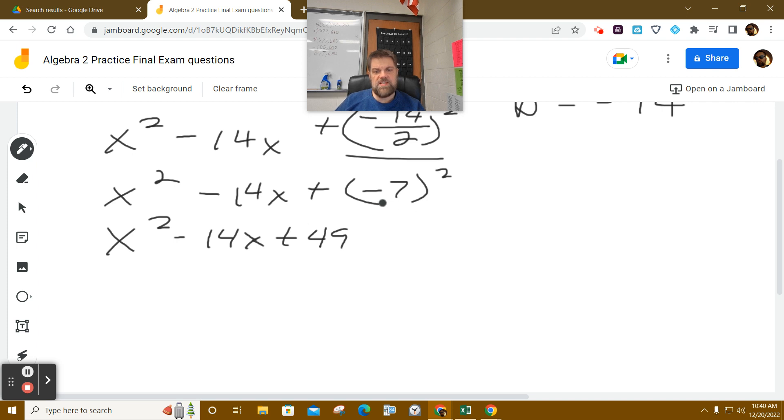Now, this value here is actually equal to x minus 7, squared.